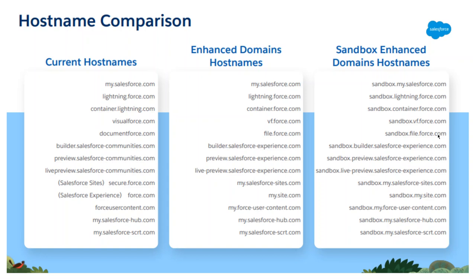These examples show both sandbox and production hostname differences. For production, my.salesforce.com stays the same, but documentforce.com changes to file.force.com. Builder Force changes format, and salesforce-community.com is replaced. Also, secure.force.com is now my.salesforce-sites.com, and so forth with other legacy URLs.